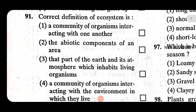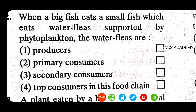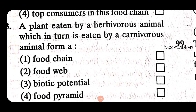When a big fish eats a small fish, which eats water flies supported by phytoplankton, the water flies are primary consumers. A plant eaten by a herbivorous animal, which in turn is eaten by a carnivorous animal, forms a food chain. The right answer is food chain.